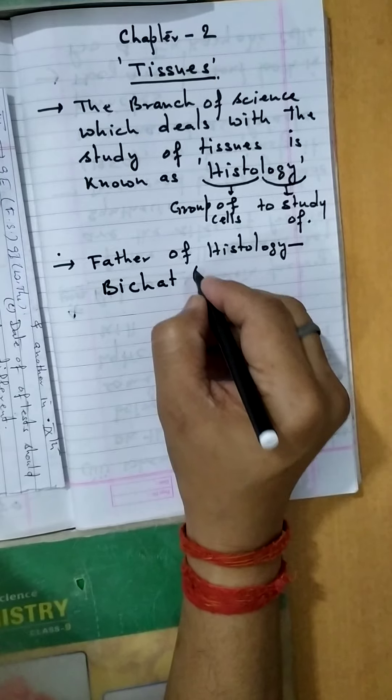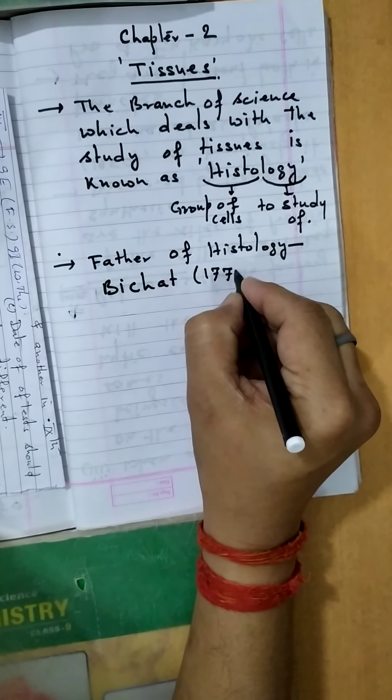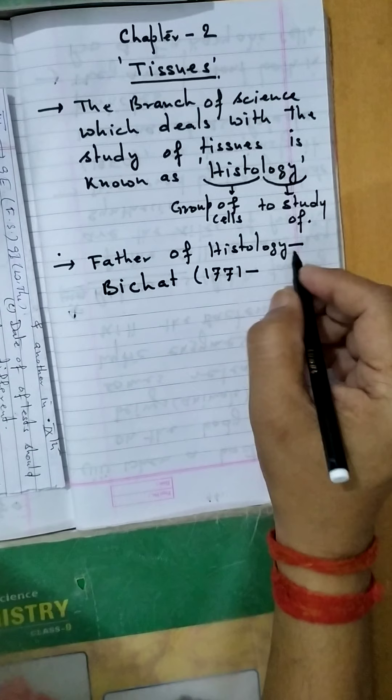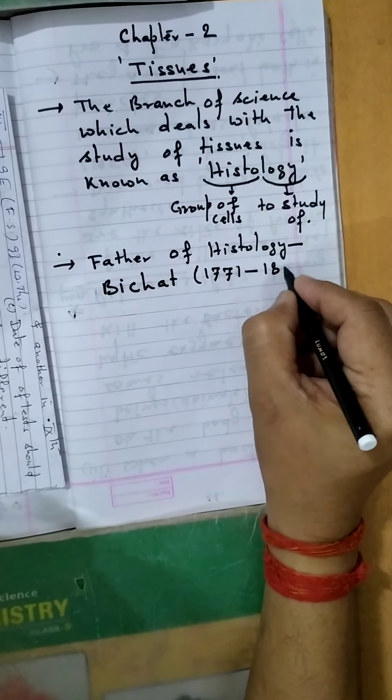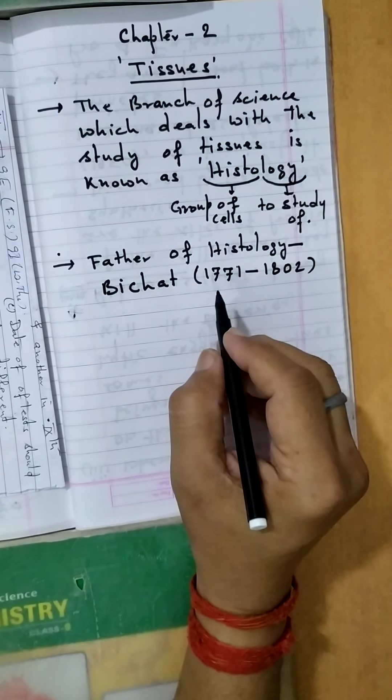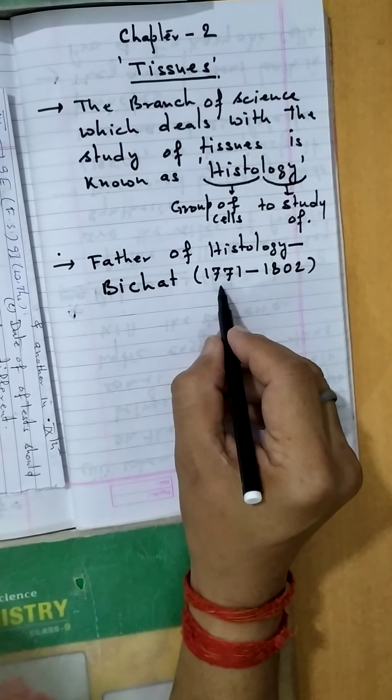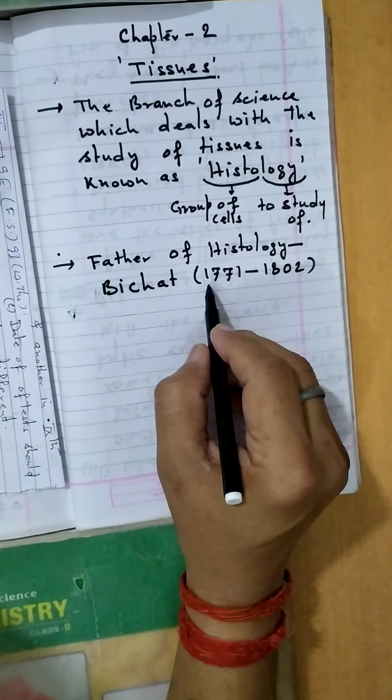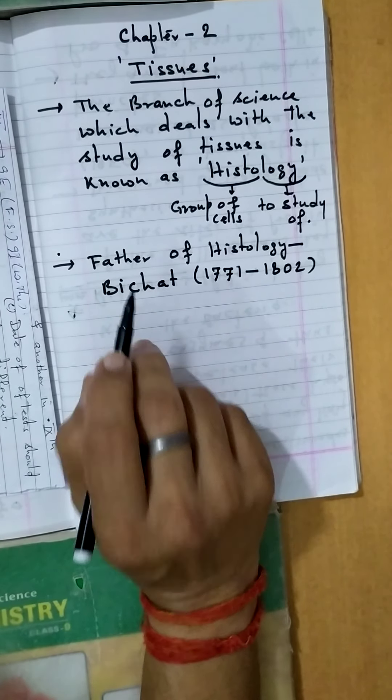His working period was 1771 to 1871. This is not the year of birth and year of death. This is the working period of this scientist.